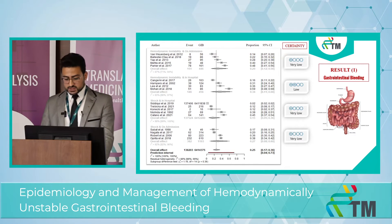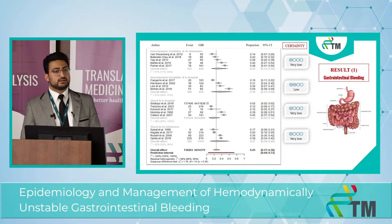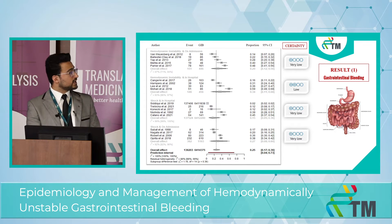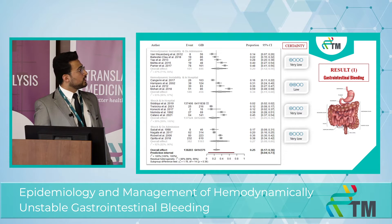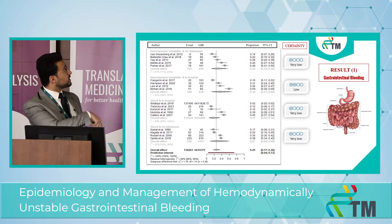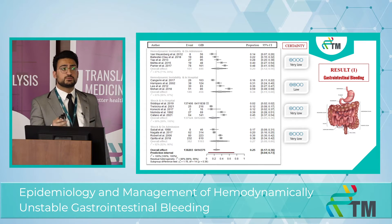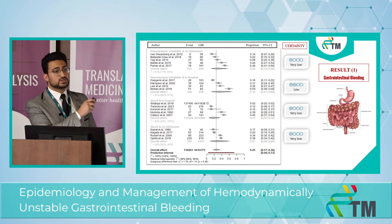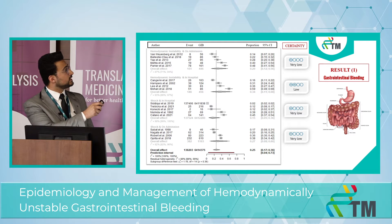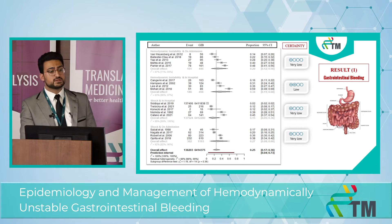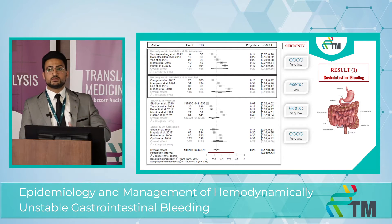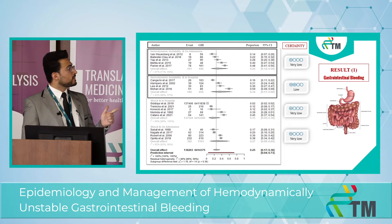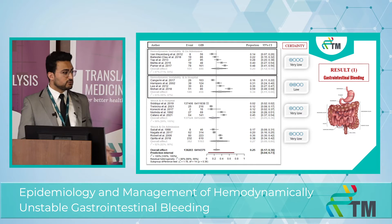I'll introduce my plots with a short orientation. On the right side you can see the source of bleeding — in this case, gastrointestinal bleeding where articles didn't specify upper or lower source. The first column shows the studies, the second column shows the events (patients who developed shock or hemodynamic instability), the third column shows the bleeding source, and the right side shows the proportion with 95% confidence interval. Subgroup analysis was based on whether patients developed shock or hemodynamic instability, and the time of assessment — on admission or during hospital stay.